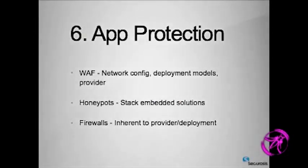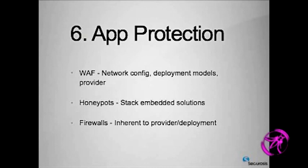Some cloud providers will allow you to do vulnerability assessment, but that's about the extent of it — they're not going to let you do fuzzing and other types of stress testing. For app protection, a lot of this is going to look like exactly what you do today. There might be a firewall, there's probably going to be a WAF. There are new technologies that allow you to embed honeypotting within your own stack — it leaves small traces of what looks like a vulnerability, and if it gets attacked you know you're under attack and can take countermeasures through a WAF. Firewall is inherent to the cloud providers, so check the SLA for what your vendor will filter. On IaaS, you'll mostly deal with security zones and IP filtering.